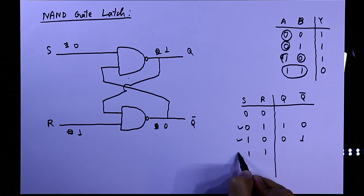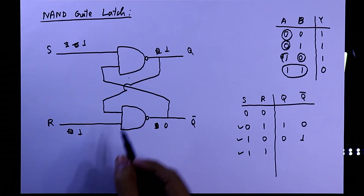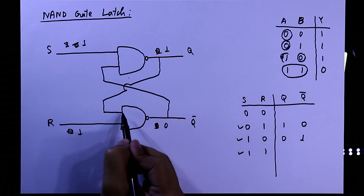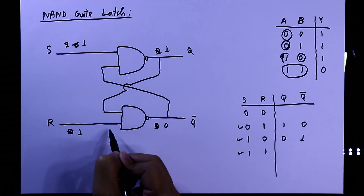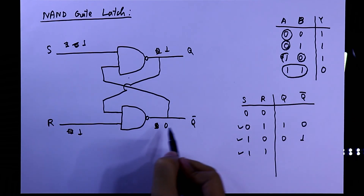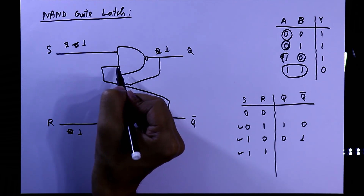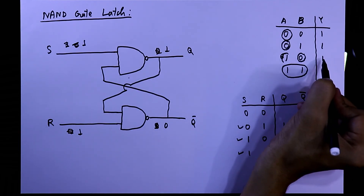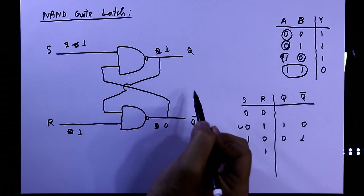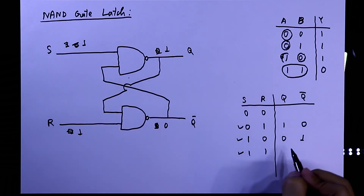For the fourth condition, R=1 and S=1. The previous output of 1 comes in, making both inputs 1, so the output is 0. This 0 goes to the other gate; any input of 0 gives output 1. So when both inputs are 1, the NAND latch is in the memory state.